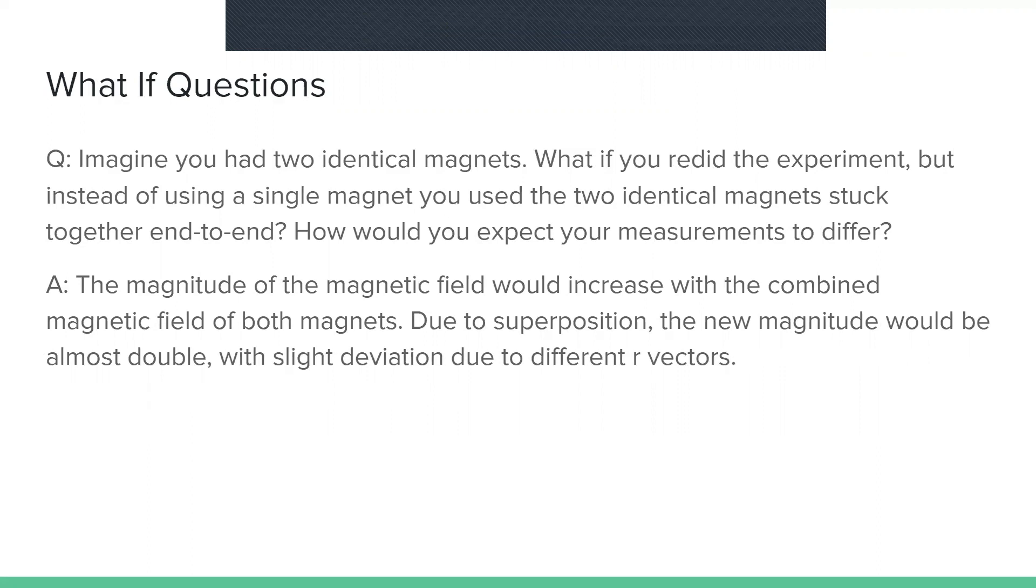The magnitude of the magnetic field would increase due to the combined magnetic field of both magnets. Due to superposition, the new magnitude would be almost double, with slight deviation due to different r vectors.